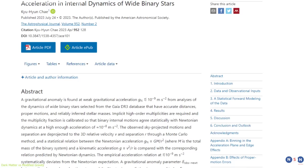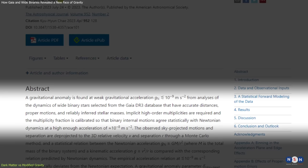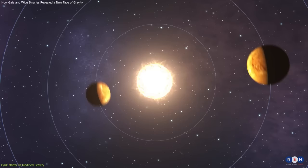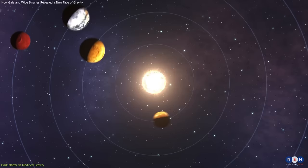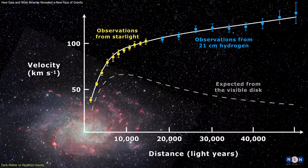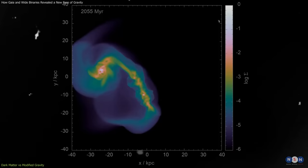Modified gravity is an alternative hypothesis that proposes that gravity behaves differently at low accelerations than at high accelerations, and that this can explain some of the puzzling observations in astronomy and cosmology, such as the rotation curves of galaxies.